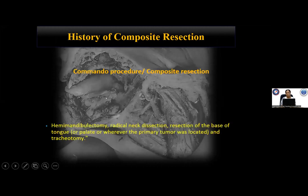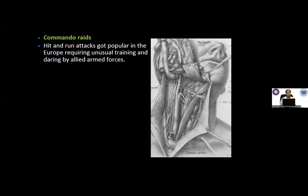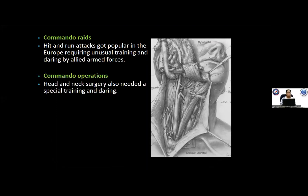The terms commando and composite resection are used interchangeably. Initially, the commando or composite resection referred to hemimandibulectomy, radical neck resection, resection of the base of the tongue or palate along with tracheostomy. During the Second World War, armed forces were given special training and called commandos. Similarly, head and neck surgery was quite radical at that time, needing radical neck resection and major surgeries requiring special training. These surgeries were thus called commando surgeries.